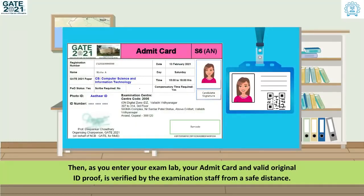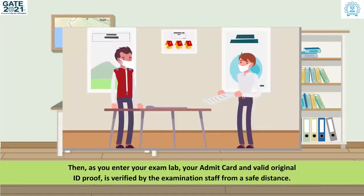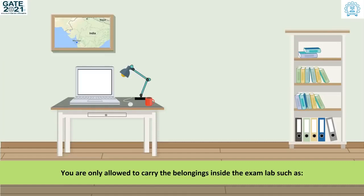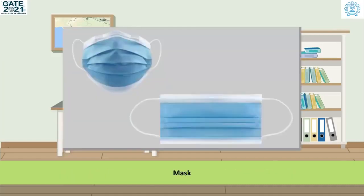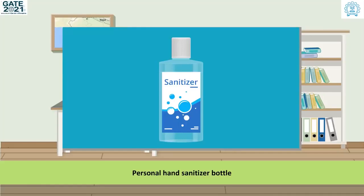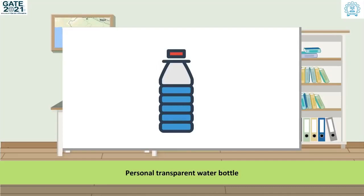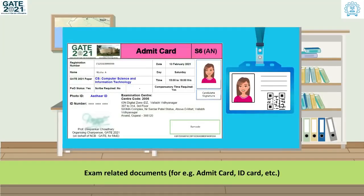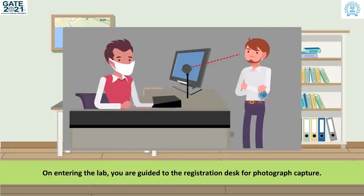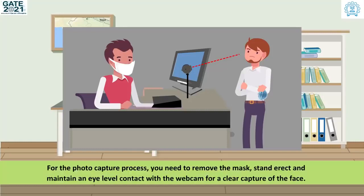As you enter your exam lab, your admit card and valid original ID proof is verified by the examination staff from a safe distance. You are only allowed to carry the following belongings inside the exam lab: mask, gloves, personal hand sanitizer bottle, a simple pen and/or pencil, personal transparent water bottle, and exam-related documents such as admit card, ID card, etc. On entering the lab, you are guided to the registration desk for photograph capture. For the photo capture process, you need to remove the mask, stand erect, and maintain eye-level contact with the webcam for a clear capture of the face.